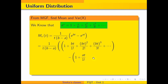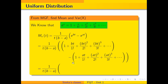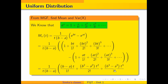Minus the expansion of e^(at): 1 + at/1! + (at)²/2! + (at)³/3! + ... Now we simplify. The 1 and 1 cancel. We get: (b−a)t/1! + (b²−a²)t²/2! + (b³−a³)t³/3! + ...